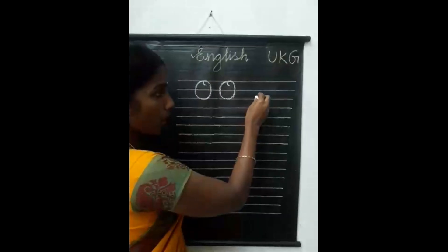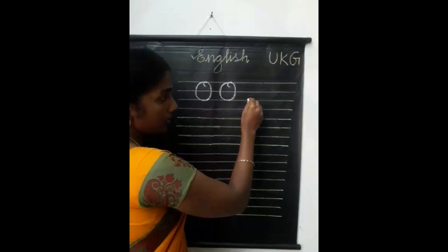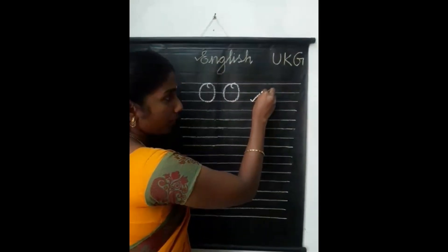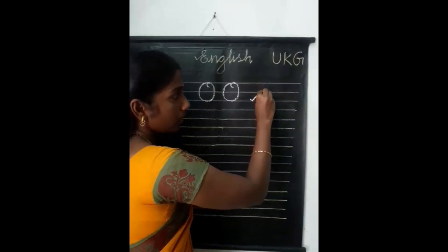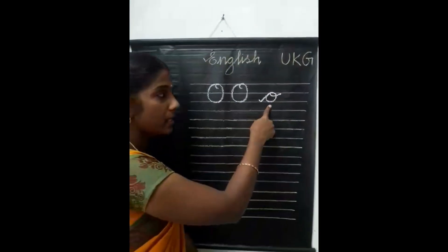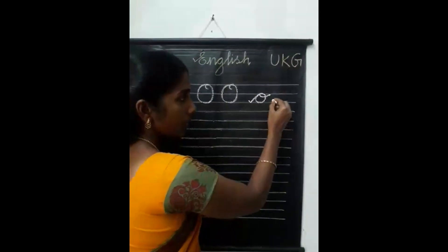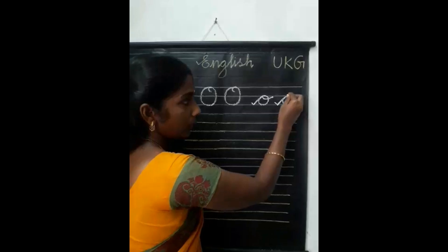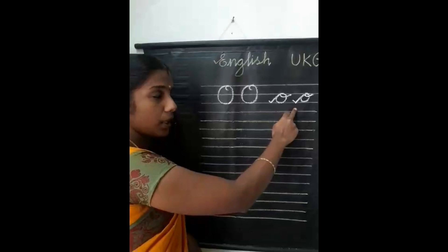Capital letter O. Then small letter O. Between the second and third line you should write. First write a slant line, then from here write a circle, then write one tick mark like this — touch here. Now you will get small letter O.